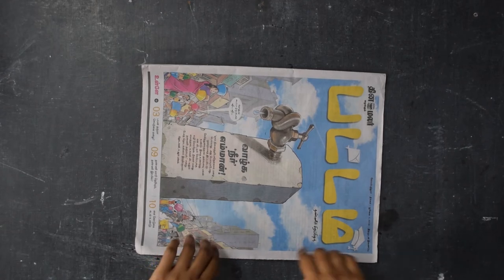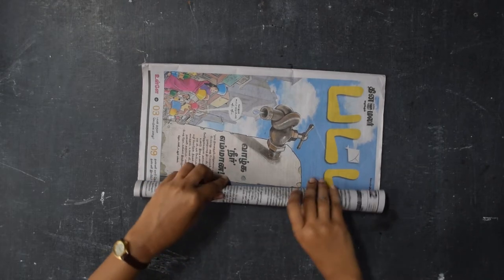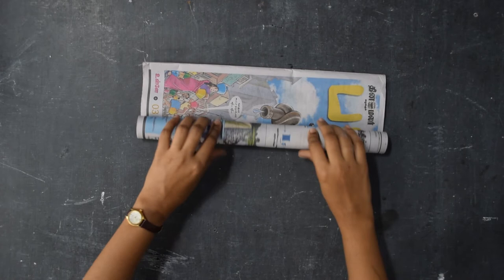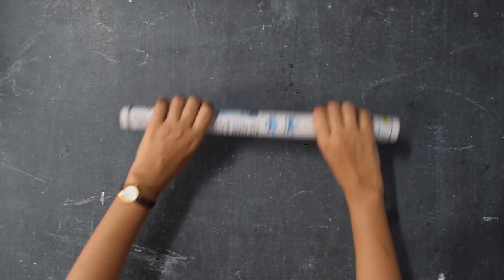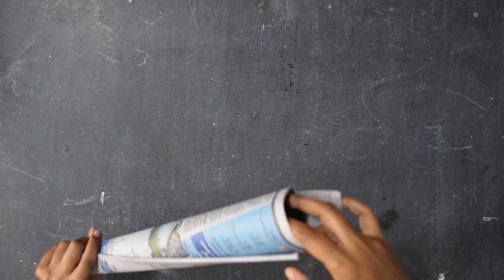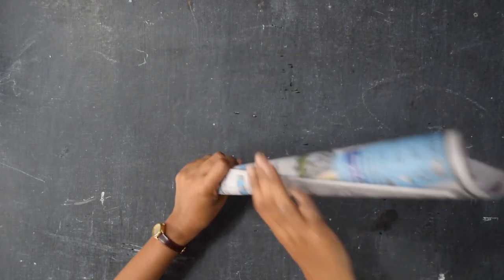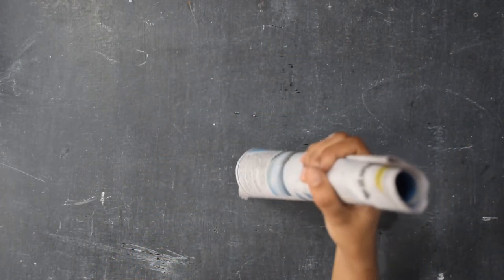First, take a newspaper and along the long side, roll it. Now, holding one side, open out the other side so that it is wider on one side and narrow on the other side.